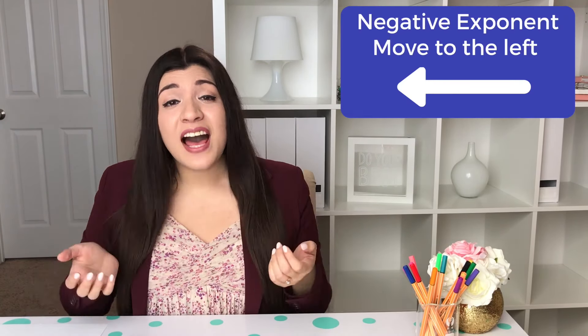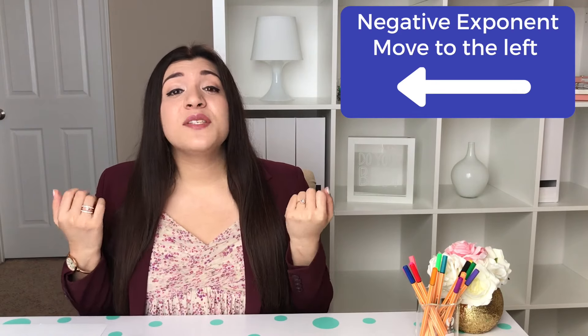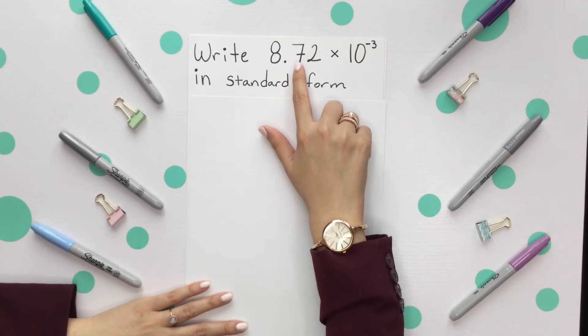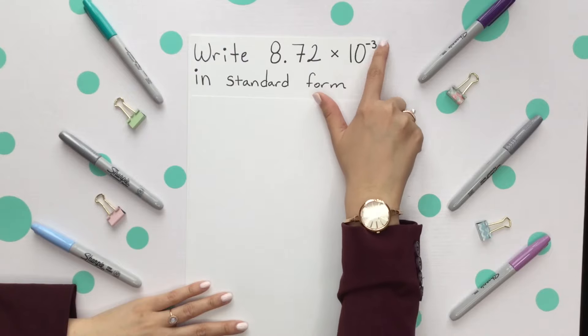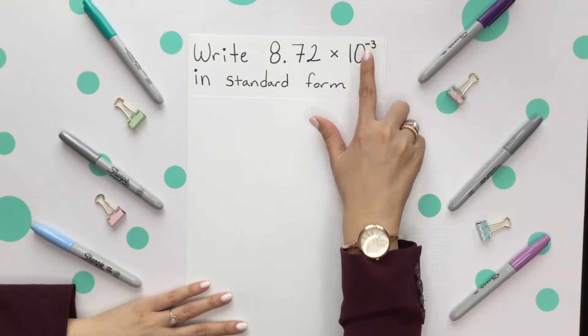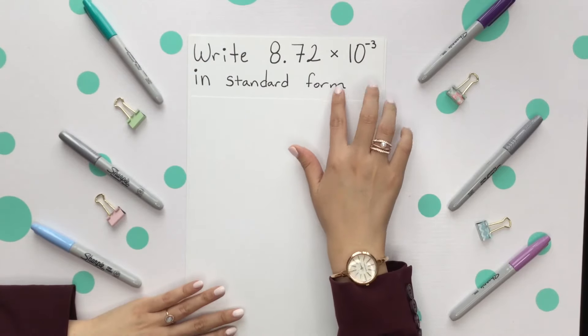When we're writing numbers that are already in scientific notation and going back to standard form, that exponent tells you whether to move to the right or to the left. If it's negative, you're going to move to the left, and if it's positive, you're going to move to the right. Let's write 8.72 times 10 to the negative third in standard form.